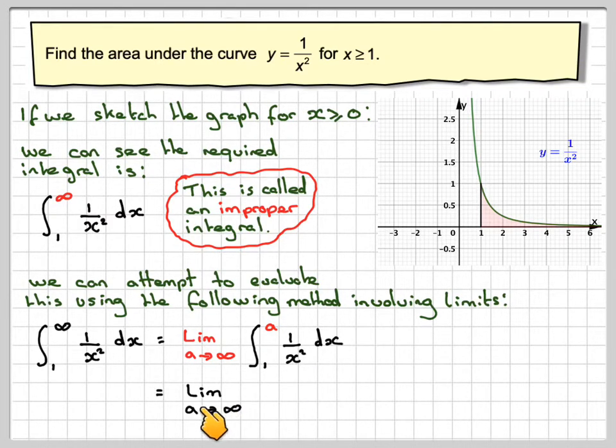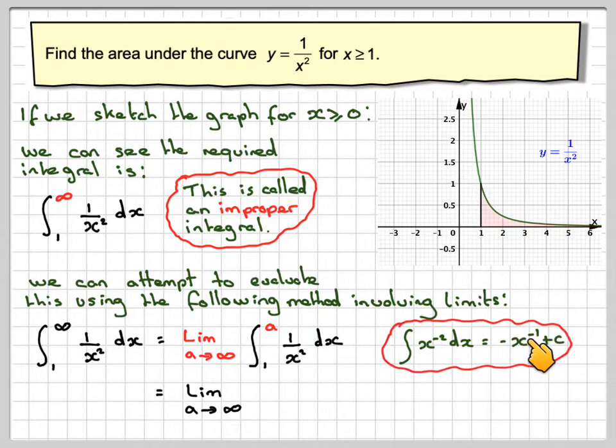That becomes the limit as a goes to infinity. If you integrate x to the minus 2, which is what 1 over x squared is, you're going to get minus x to the minus 1. So this now becomes minus 1 over x. We put the limits at the end from 1 to a, and then we proceed as we would normally do.